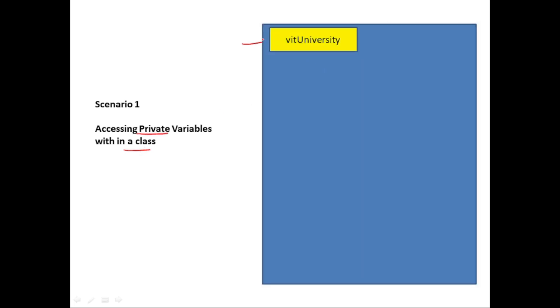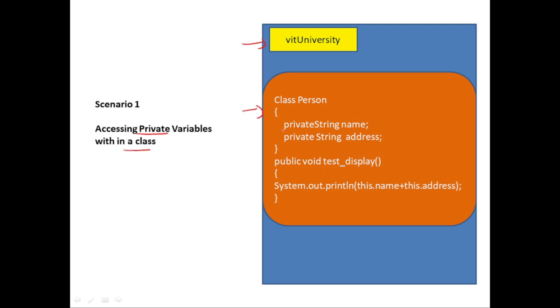Now let's look at the behavior of access modifier private. We have the VIT University package with class Person, and now we are going to have two private data members: name and address. Scenario one: can you access two private data members within the methods of the same class? The answer is yes — even though these two data members are private, you can access them within the methods of the same class. So the answer to scenario one is yes. We'll go through all the scenarios and then take a demo of everything together.